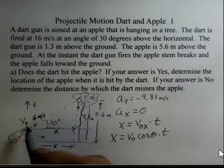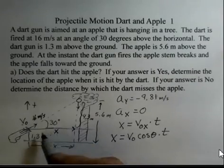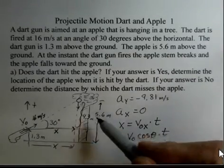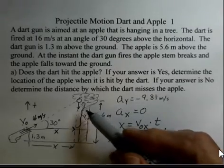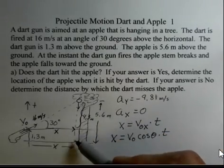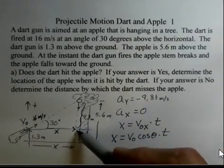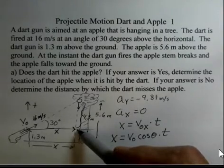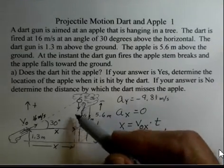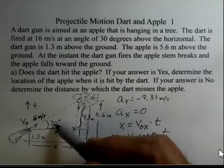Instead, I want to take a look at this triangle, this right triangle. X is the base. We have 5.6 meters to the apple. 1.3 meters gets us to a horizontal at the dart where it starts. So there's 4.3 meters in the side here, 30 degrees.